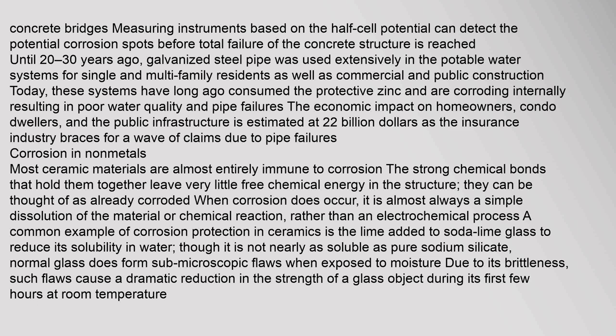Corrosion in non-metals. Most ceramic materials are almost entirely immune to corrosion. The strong chemical bonds that hold them together leave very little free chemical energy in the structure — they can be thought of as already corroded. When corrosion does occur, it is almost always a simple dissolution of the material or a chemical reaction, rather than an electrochemical process. A common example of corrosion protection in ceramics is the lime added to soda-lime glass to reduce its solubility in water. However, normal glass does form sub-microscopic flaws when exposed to moisture, which can cause a dramatic reduction in the strength of a glass object during its first few hours at room temperature.